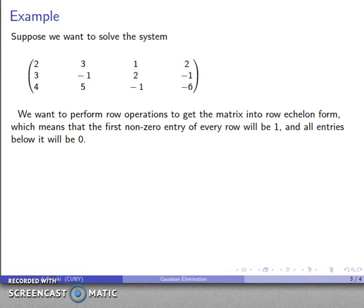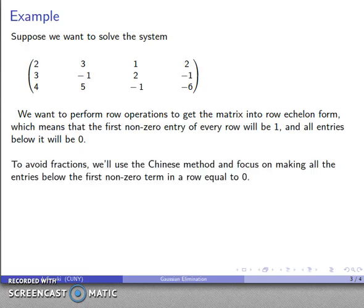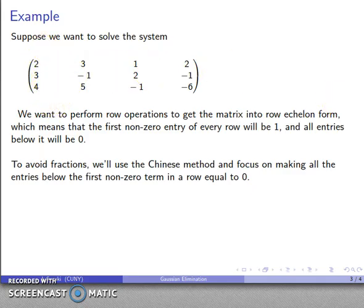Now I want to perform row operations to get this matrix into row echelon form, which means the first non-zero entry of every row is going to be 1, and all of the entries below it will be zero. To avoid fractions, I'll use the Chinese method and focus on first making all the entries below the first non-zero term zero, clearing out the columns, and then worry about getting the coefficients equal to one.